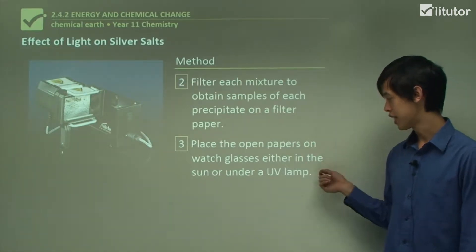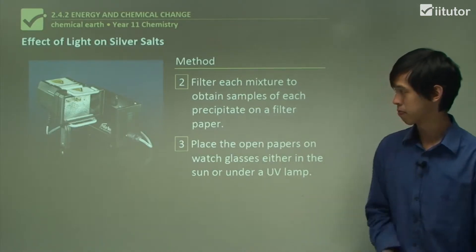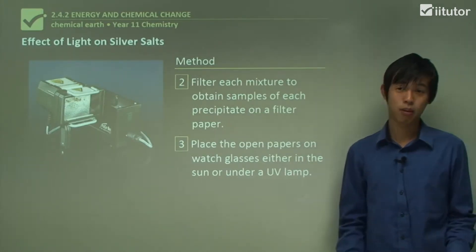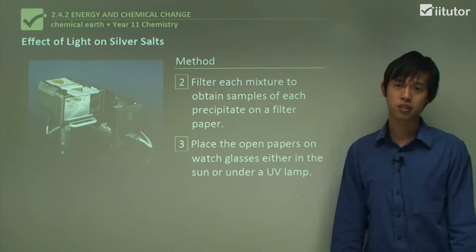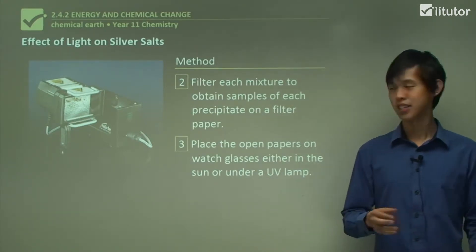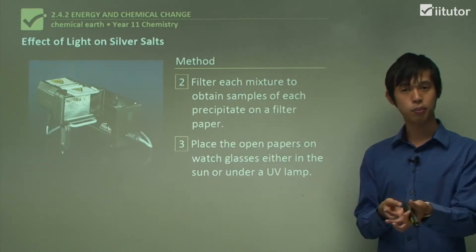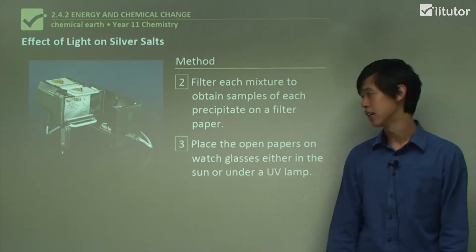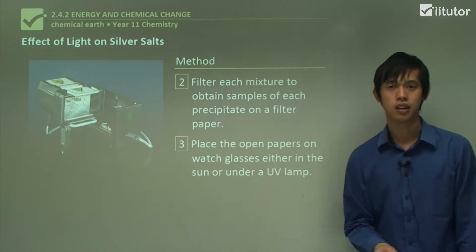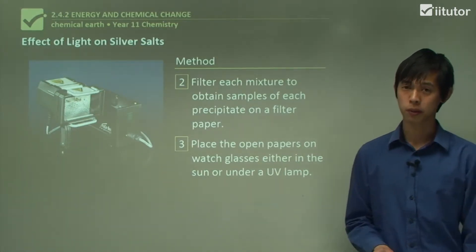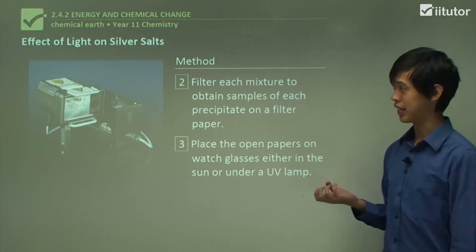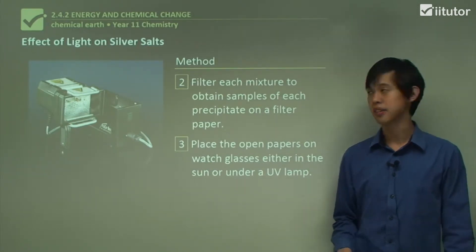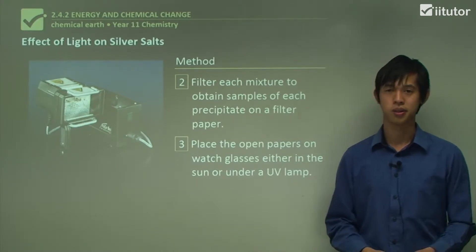Place the open papers on watch glasses, either in the sun or under a UV lamp. You may not have access to a UV lamp, but the Earth has its own UV lamp 200 million kilometres away — that's the sun — so we might as well use it. Just put your silver chloride and silver bromide on a watch glass and leave them out in the sun, or use a UV lamp if available.